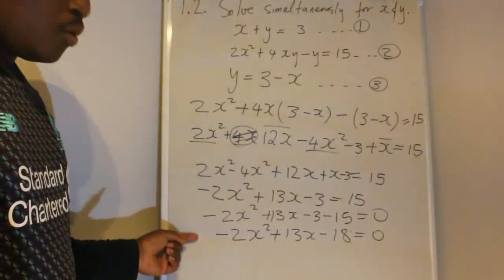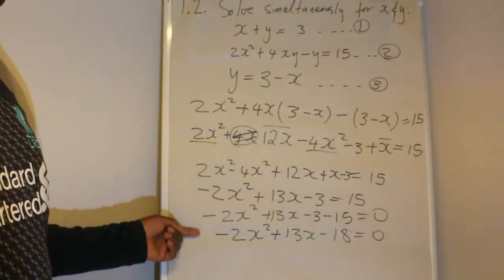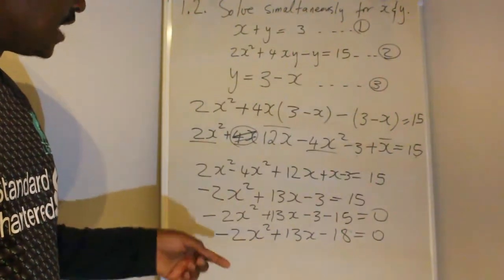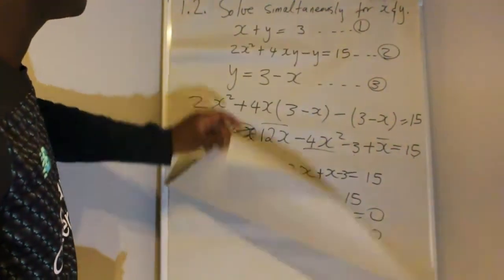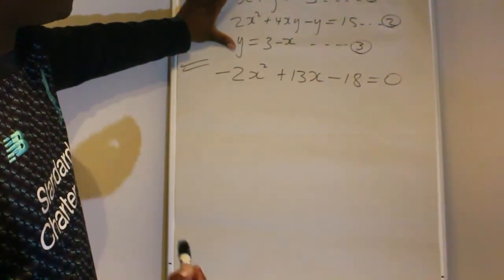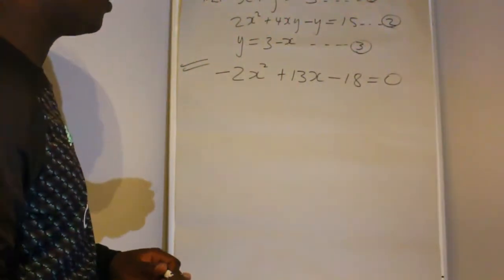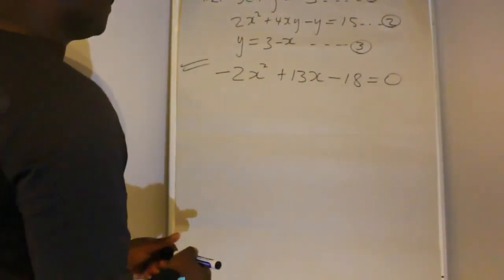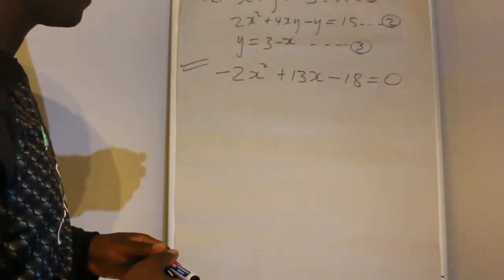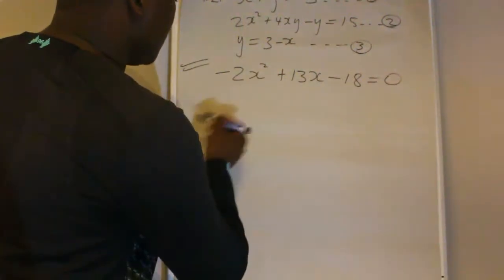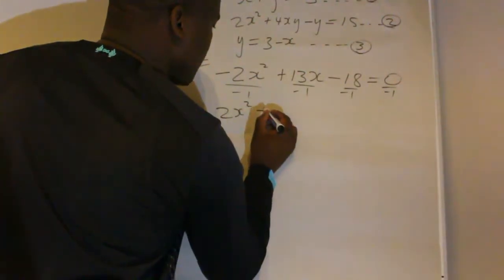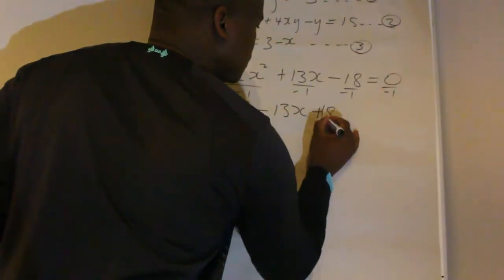So when you're here, this is an easy quadratic equation that you must solve. First, divide through by negative 1: 2x squared minus 13x plus 18 equals 0.